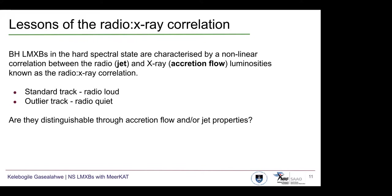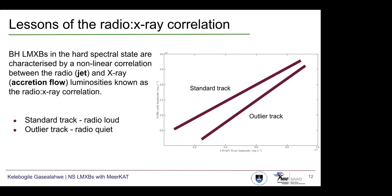This is an example schematic of the radio X-ray plane from the hard spectral state down to quiescence, with X-ray luminosities in the 1 to 10 keV energy band. The radio luminosities are plotted at 5 gigahertz, and these luminosities range between 10^32 to 10^39 for the X-ray and then 10^25 to 10^31 erg/s for the radio.